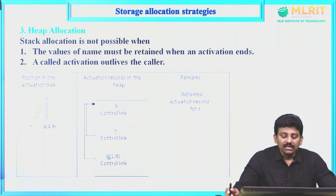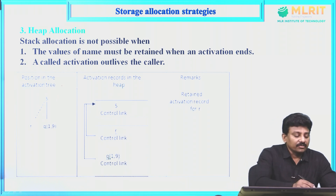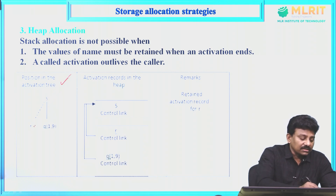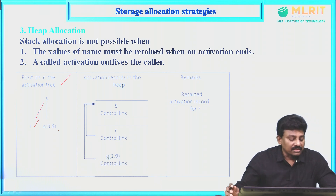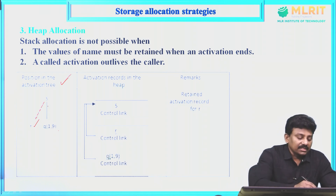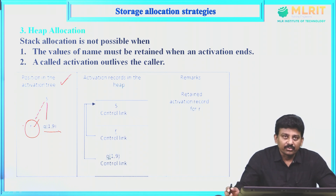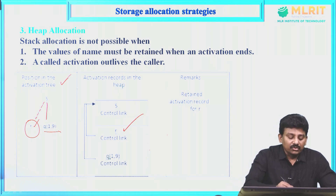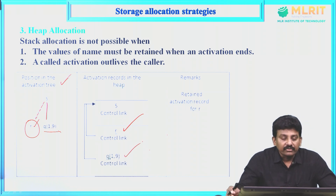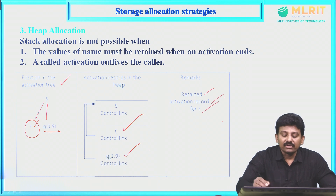In heap allocation, even when a procedure is inactive or has ended, the values are retained in memory. For example, s calls a function r. After r ends (shown by a dashed line), the activation record for r is still available on the stack. Even though r has ended, both the activation record for r and the activation record for Q(1,9) are available and retained. This ability to retain activation records even after a procedure ends is the usefulness of heap allocation. Thank you.